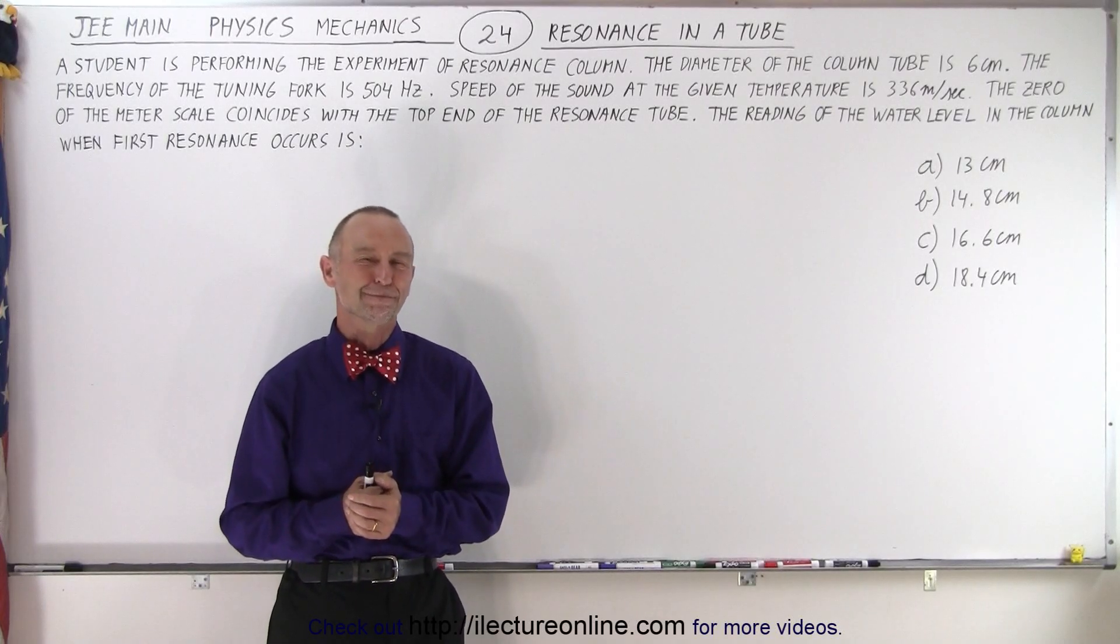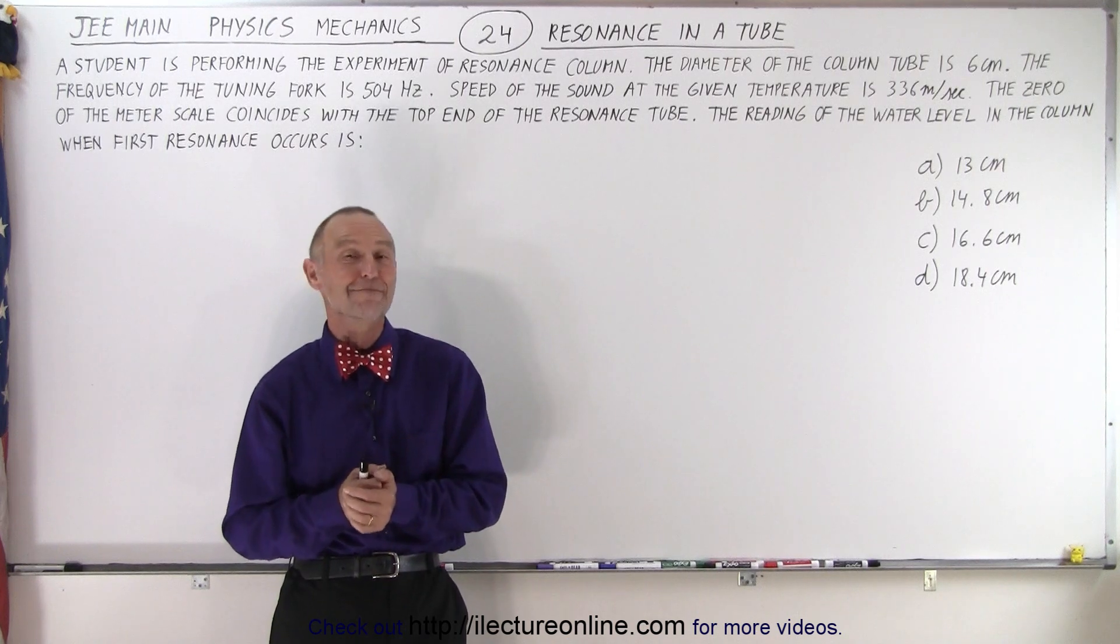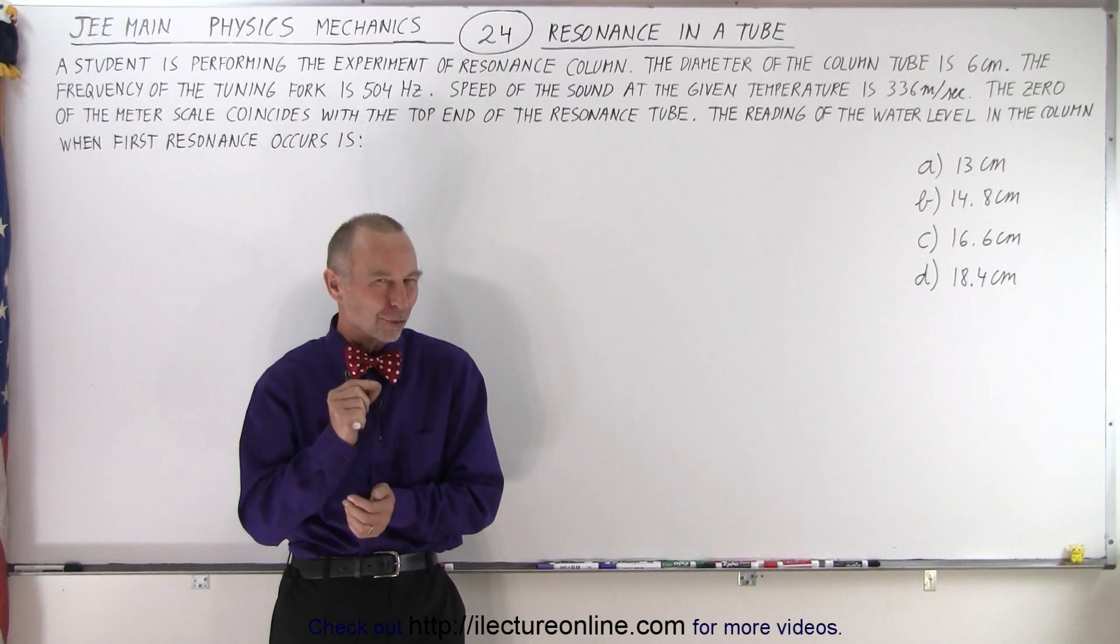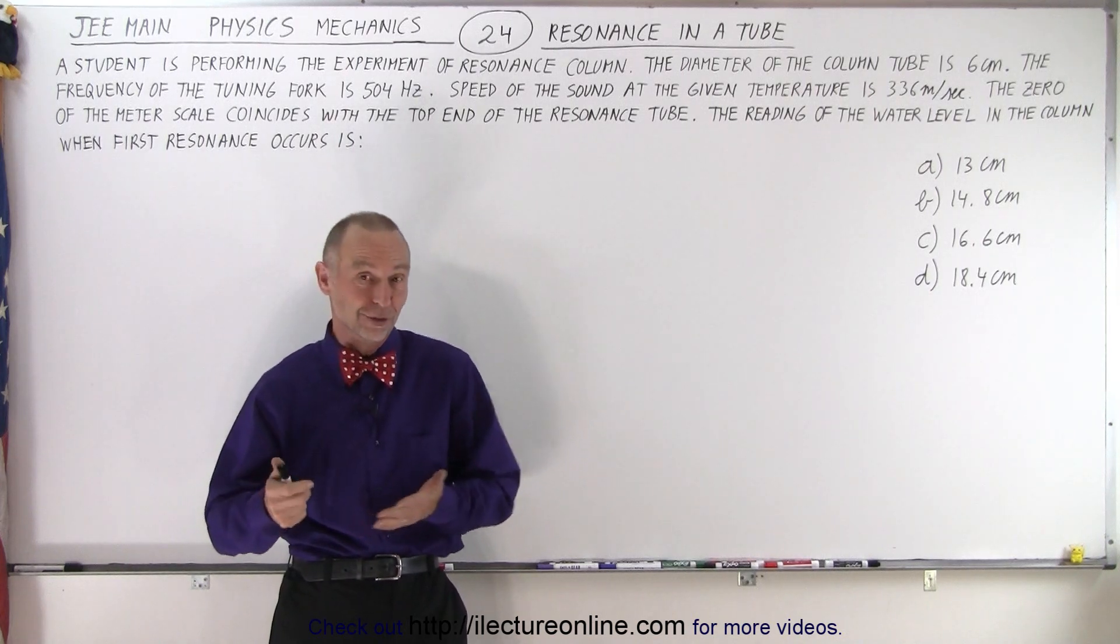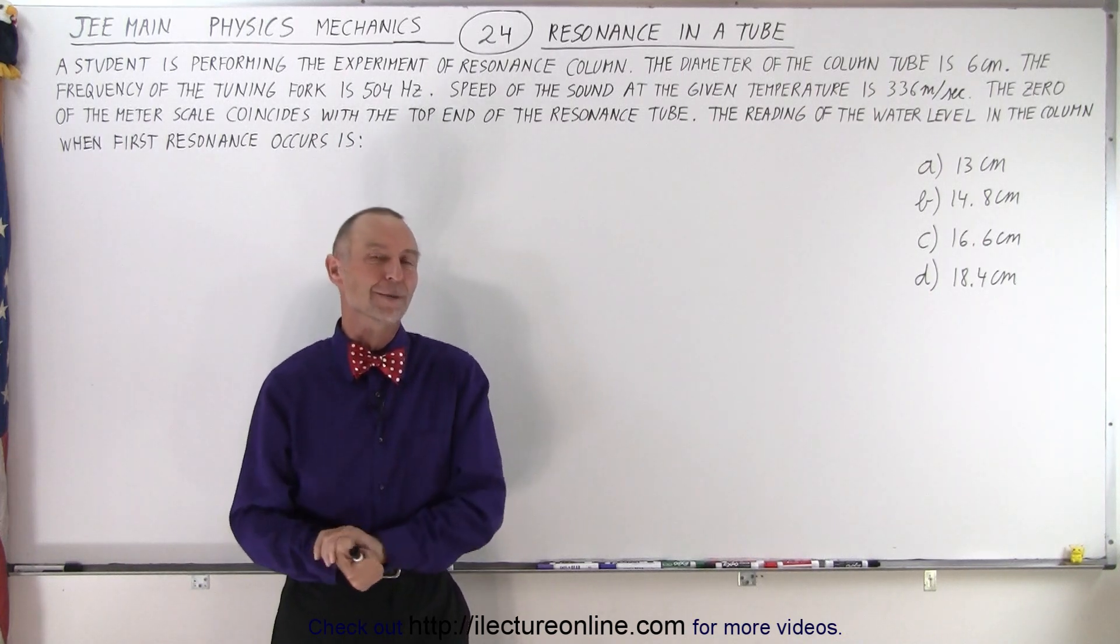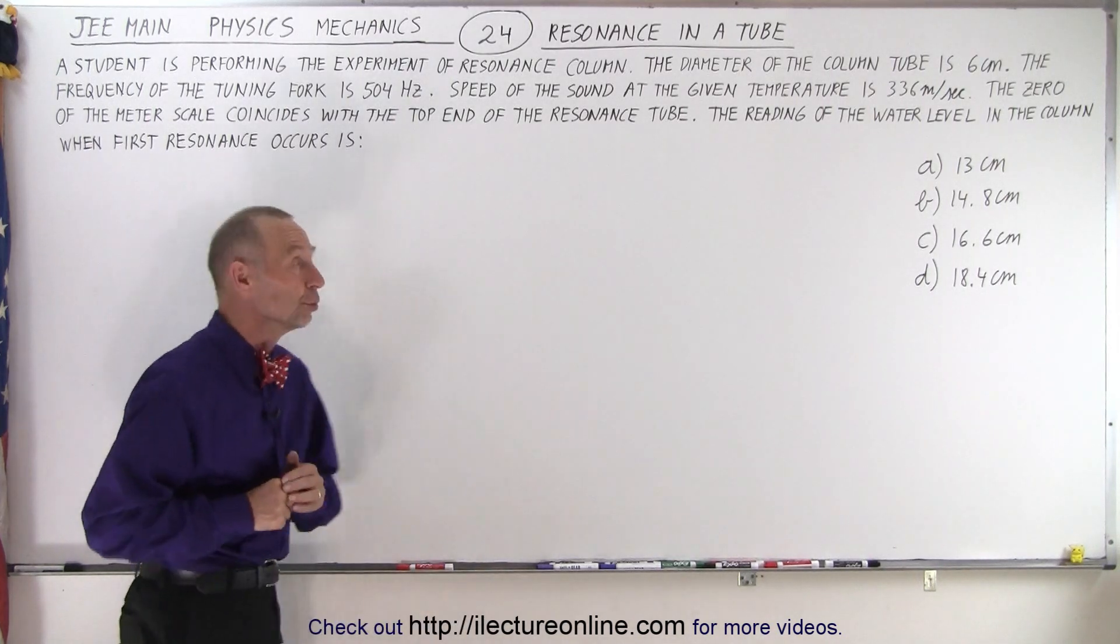Welcome to Electronline. Here we have an example where the problems on the JE Main test can be a little bit tricky. You have to be very careful or you'll get the wrong answer. So here's an example dealing with resonant tubes.